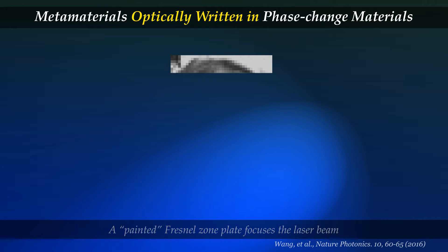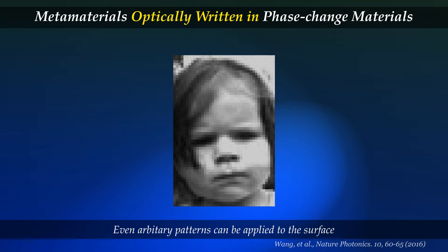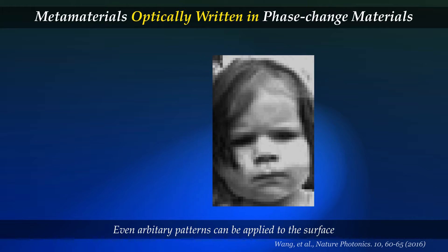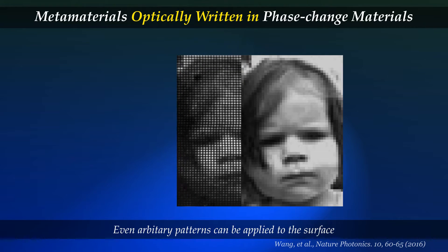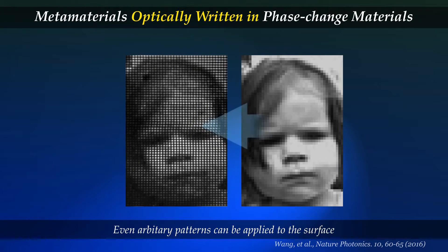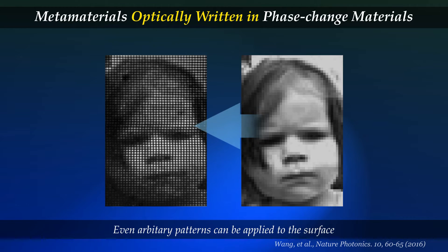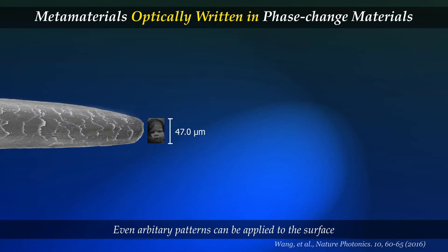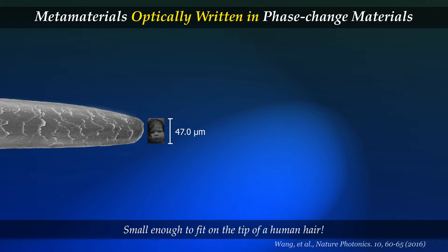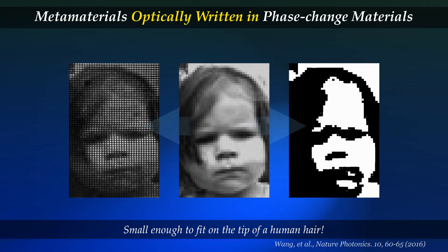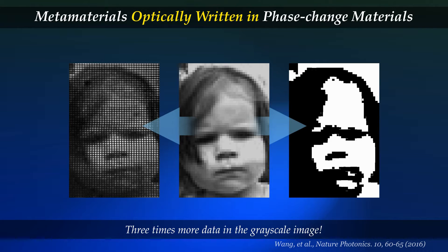We can even write completely arbitrary patterns into the surface, such as this demonstration grayscale image of a little girl, written into an area smaller than the tip of a human hair. Comparing the grayscale image with the equivalent binary image as used in CDs, you can see the huge amount more information we can fit into a given space with our writing scheme.